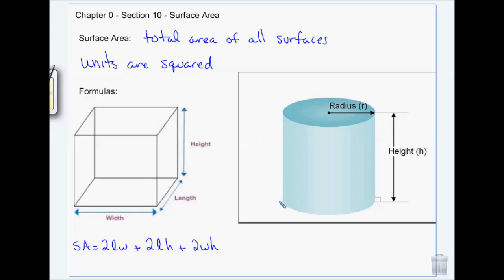The surface area of a cylinder is 2πr² — that gives you the area of the two circles — plus 2πrh, which gives you the area of the side. Make sure you have these formulas written down correctly.